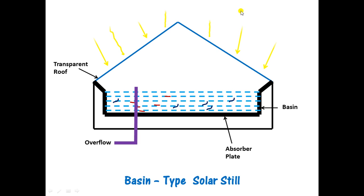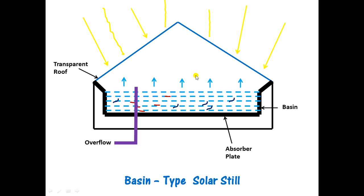As solar radiations are incident on the transparent sloping roof, these radiations enter into the chamber. As the solar radiations enter, the saline water gets heated up, its temperature increases, and it starts to rise up in the form of water vapor.